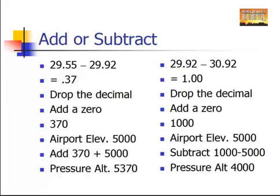So there is how you figure pressure altitude. As I said, you have to know how to do this and you have to know how to do it by hand. So the key is to remember drop the decimal, add a zero. If the pressure is lower than standard, you add to airport elevation. If the pressure is higher than standard, you subtract from airport elevation.